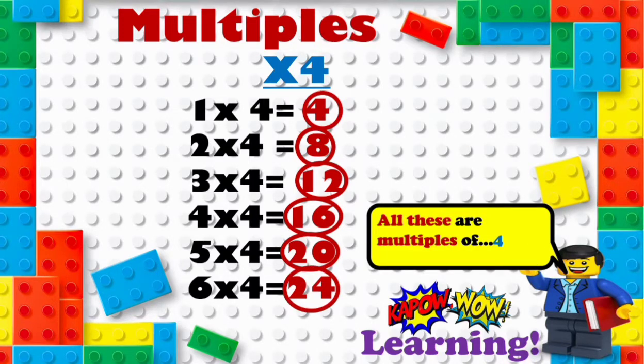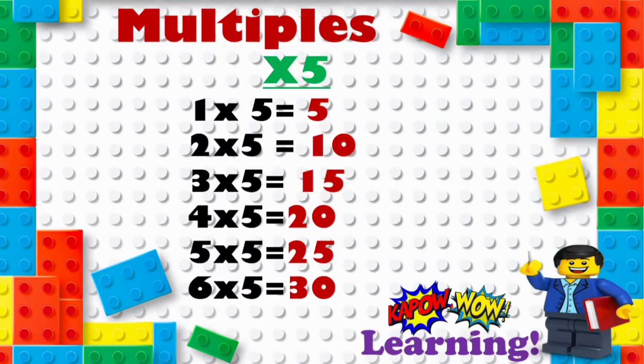Okay, so any number which is in the four times table is a multiple of four. Let's have a look at the five times table. So one times five is five, two times five is ten, three times five is fifteen, four times five is twenty, five times five is twenty-five, and six times five is thirty.